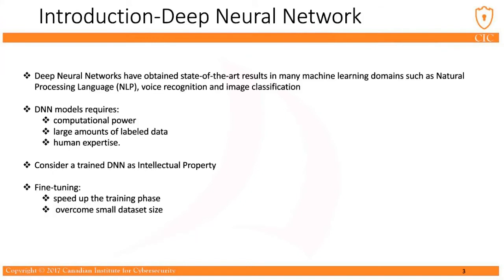Let's start with introduction. Deep neural networks have obtained state-of-the-art results in many machine learning domains, from NLP to image and text classification. Sophisticated and powerful hardware, large amounts of labeled data, and human expertise help DNNs achieve such excellent results. So we can consider trained deep neural networks as intellectual property. Fine-tuning is an effective technique to speed up the training phase of DNN models and also helps overcome small dataset size. But an adversary can utilize it as a tool for illegal redistribution, so it is necessary to protect trained deep neural networks from such attacks.